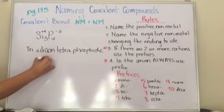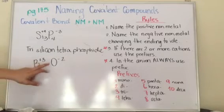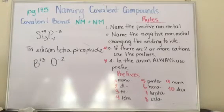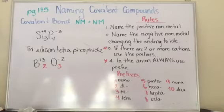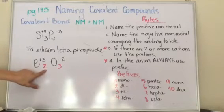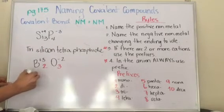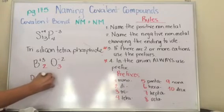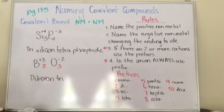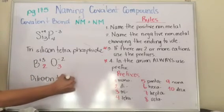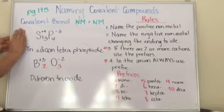Boron has a charge of plus three and let's use oxygen as negative two. Boron and oxygen — can I make this three into a two or this two into a three? No, so I exchange my numbers. Boron has two, and my rule tells me if I have two or more, I'm going to use a prefix. So two is di — diboron. I have three oxygens, so it's trioxide. I need to change the ending to -ide: trioxide. So the compound is diboron trioxide.